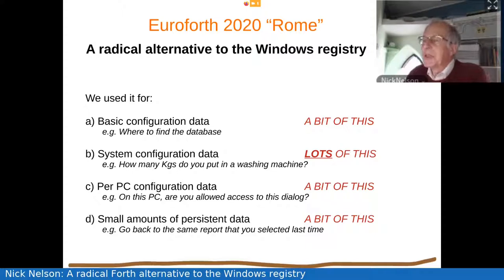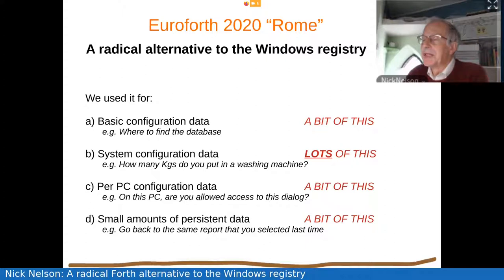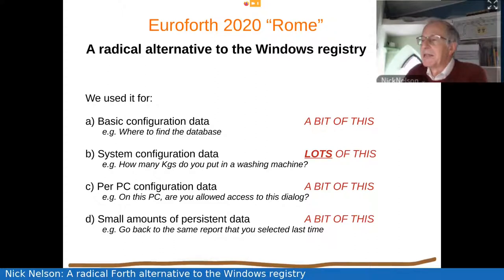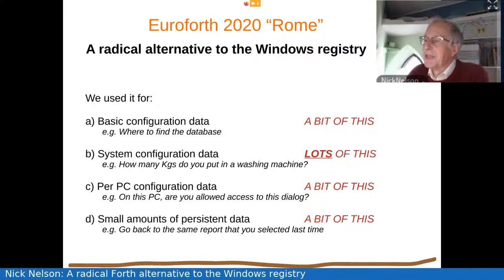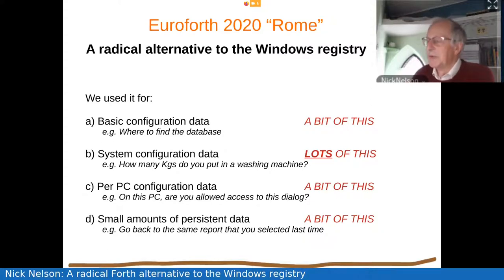Just to put this in context, a typical washing machine we're dealing with here has about one and a half tons of washing — dry weight — in it at any one time. Then there is a little bit of per-PC configuration data; for example, are you allowed to do this on this particular PC? You don't want somebody standing next to a washing machine changing the settings on the sorting area. And then we were also using the Windows registry because it was so easy to read and write, you could use it for storing small amounts of persistent data — so that when you reran a report, it came back with the same selection options you'd used last time.